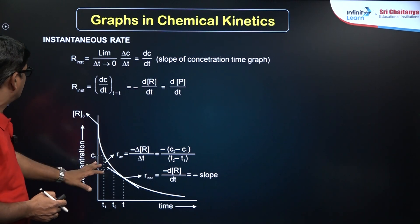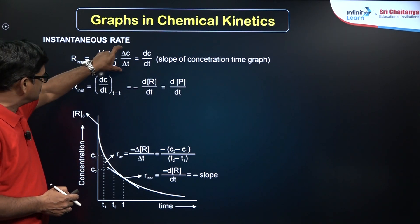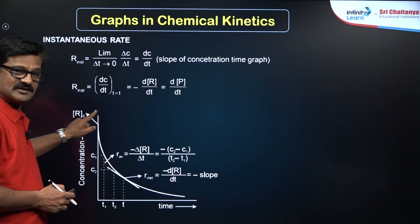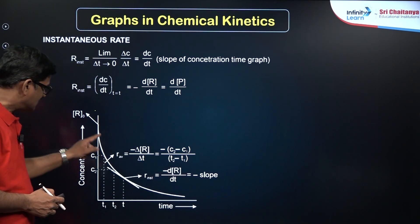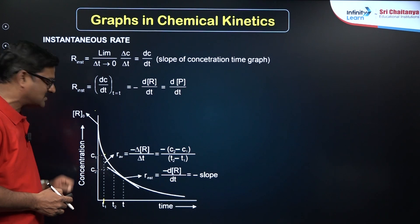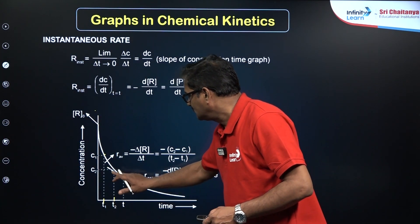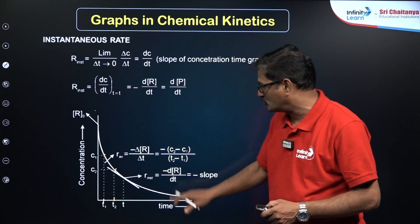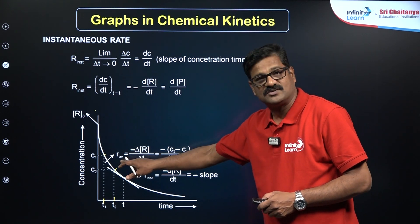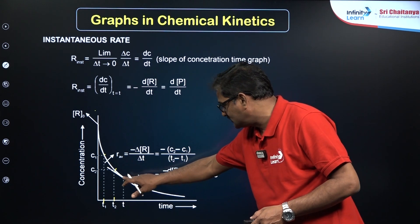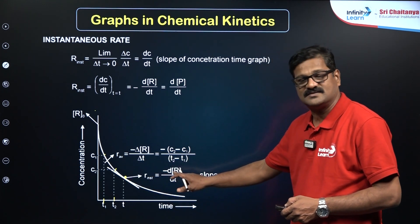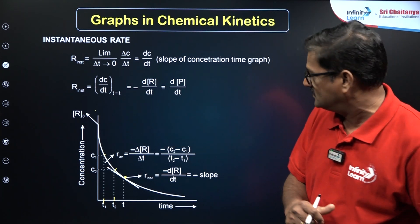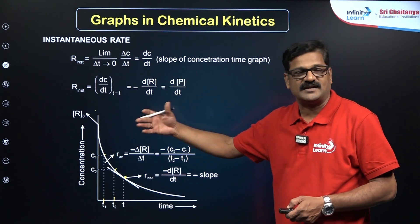From the graph, the average rate is taken over a period of time. As reactant gives rise to product, reactant concentration decreases with time — at time t₁ concentration is c₁, at time t₂ concentration is c₂. The difference c₂ minus c₁ over t₂ minus t₁ gives the average rate. Taking a tangential line gives the instantaneous rate, where rate = dc/dt. This graph illustrates both average rate and instantaneous rate.